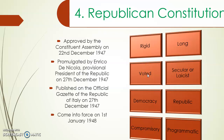It is a democratic constitution — it was voted by an assembly elected by the citizens. The principle of democracy is stated in the first article: Italy is a republican democracy. It is also a compromisory constitution — the different parties reached a compromise, each giving something to and obtaining something from the other parties.